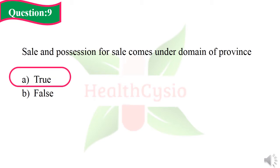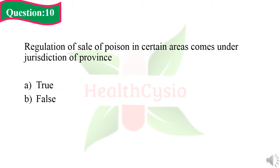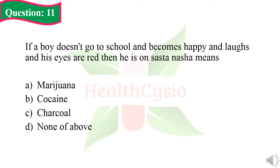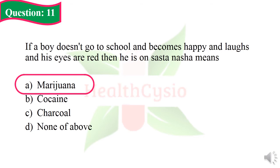Question 9 and 10: Regulation of sale of poison in certain areas comes under the jurisdiction of the province. Option A: the given statement is true. Option B: the given statement is false. The right answer is Option A, the given statement is true.